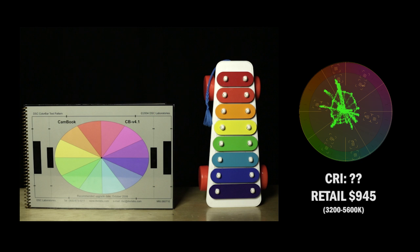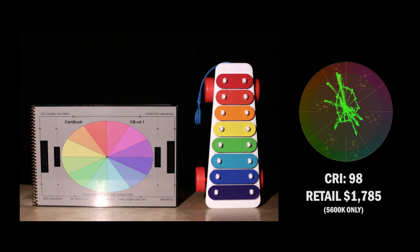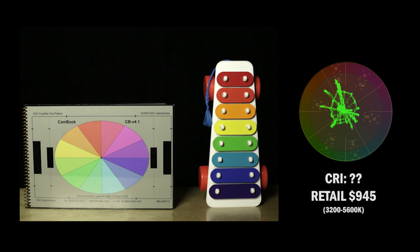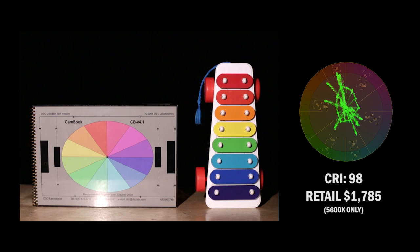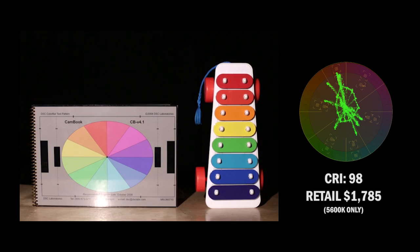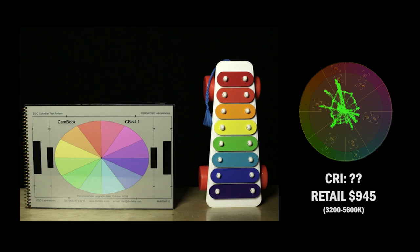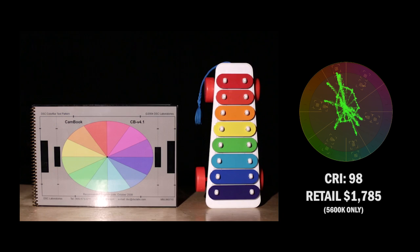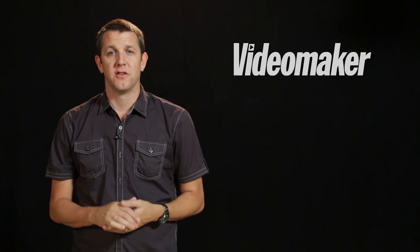So you can really see, as I toggle between the 98 CRI and the unrated, there's a huge shift in color there. So just something to be aware of if you're going to purchase a less expensive light, which, of course, we understand. Budgetary concerns are definitely a factor. But you just want to know what you're in for and know why is that light cheaper. Well, that's probably one of the reasons why. It's just a little bit less accurate, or maybe a lot less accurate, on the color spectrum.